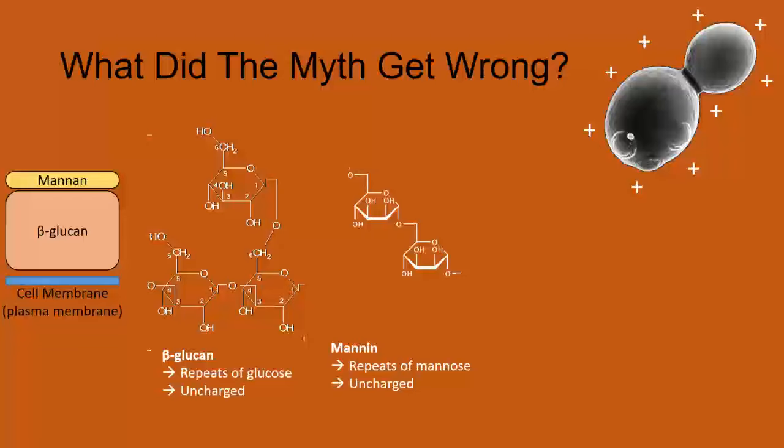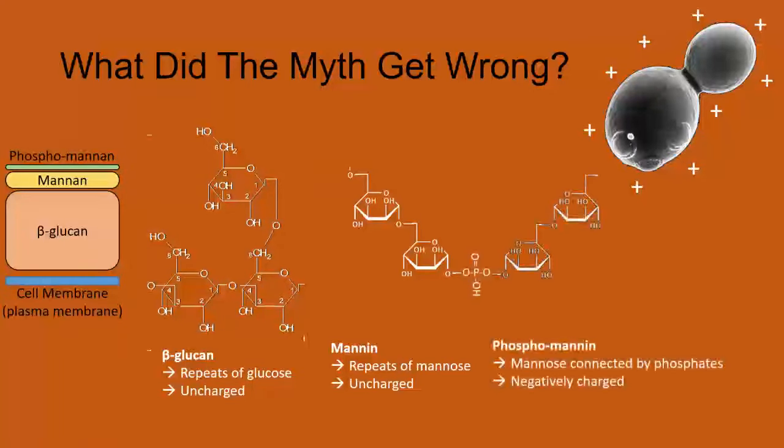And lastly, the very outer surface of the mannin is something called phosphomannin, and what this is are mannin groups connected by phosphates. And if you recall from the bacteria, those phosphates are negatively charged. So whereas the myth claimed yeast cells have positive charges on the outside, this is actually wrong. Yeast are negatively charged.